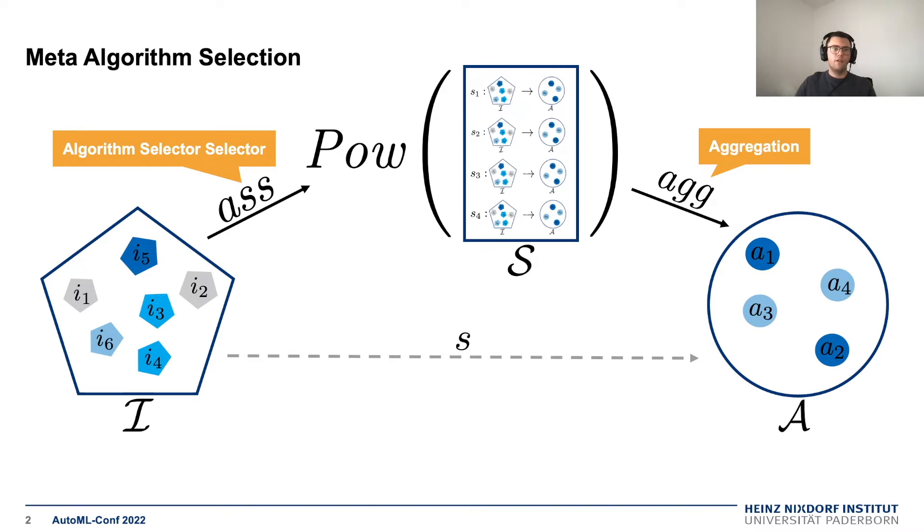The idea here is to learn a so-called algorithm selector selector, which maps from the space of our instances to the power set of available selectors. Once we have multiple selectors selected for a specific instance, we need an aggregation function that aggregates their decisions into a single algorithm.